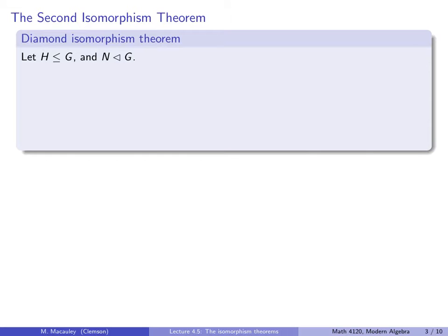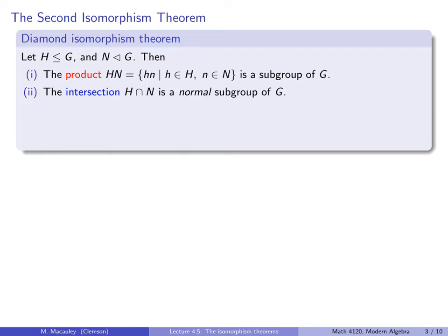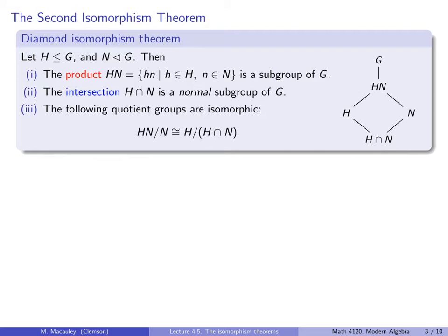Without further ado, here is the second isomorphism theorem, also called the diamond isomorphism theorem for reasons we will see shortly. Suppose H is a subgroup of G, and N is a normal subgroup of G. Then the first part says that the product HN — defined as the set of all products of the form something in H times something in N — is a subgroup of G. Secondly, the intersection of H and N is a normal subgroup of G. And finally, the following quotient groups are isomorphic: HN mod N and H mod H intersect N. A picture of this is shown on the right, and this should make it clear why it's called the diamond isomorphism theorem.